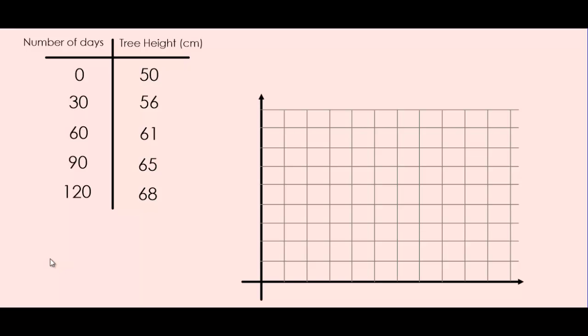When we graph, the independent variable always goes on the x-axis and the dependent variable always goes on the y-axis.